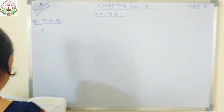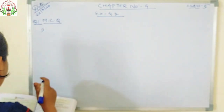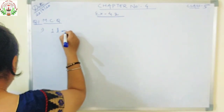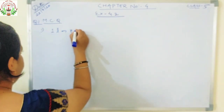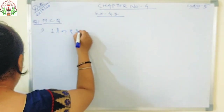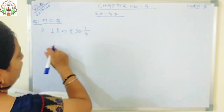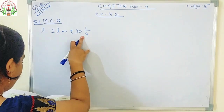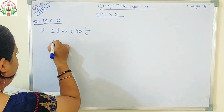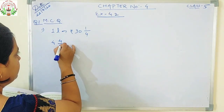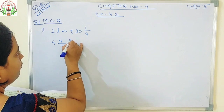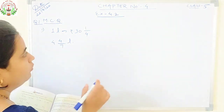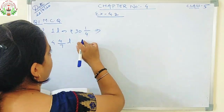First question: if the cost of 1 litre milk is equal to rupees 31 by 4, you have to find the cost of 4 and 4 by 7 litres of milk. So first we will convert both the numbers from mixed fraction into proper fraction.